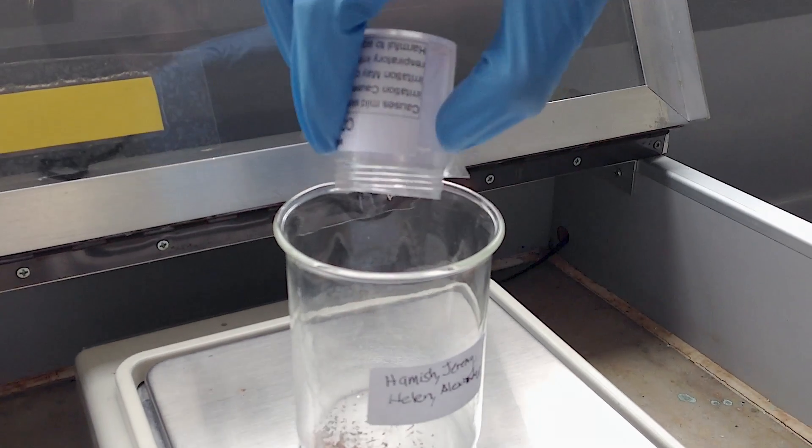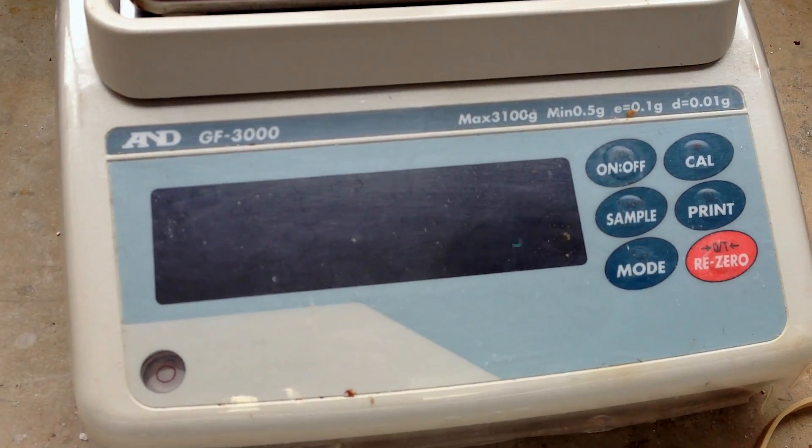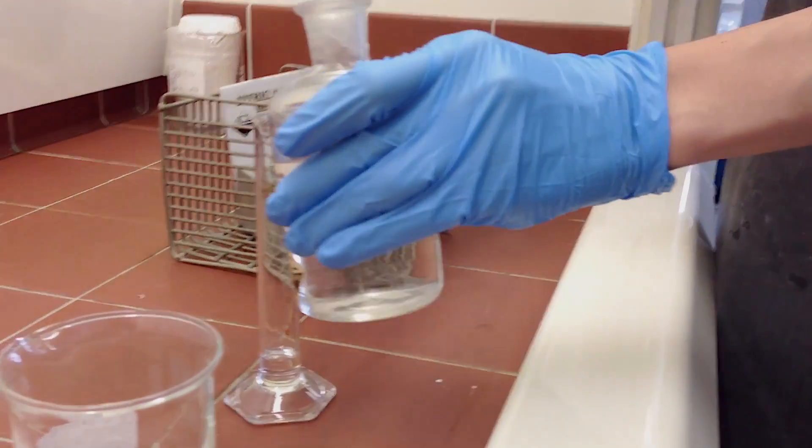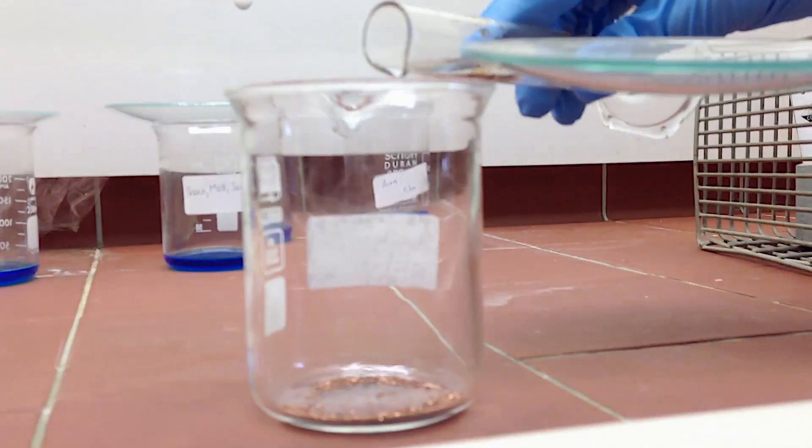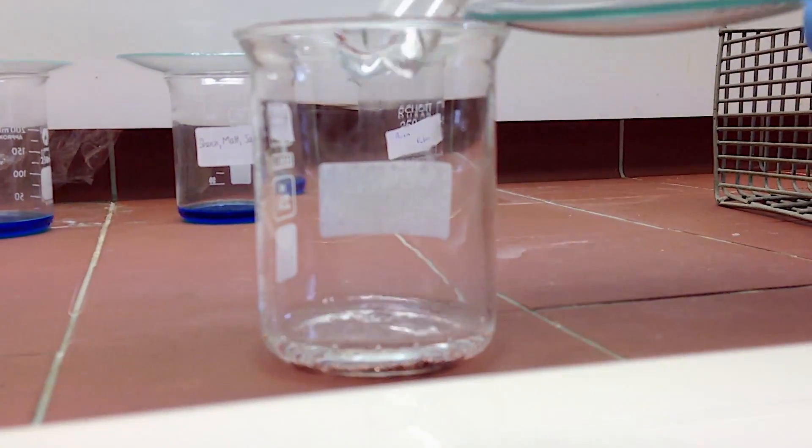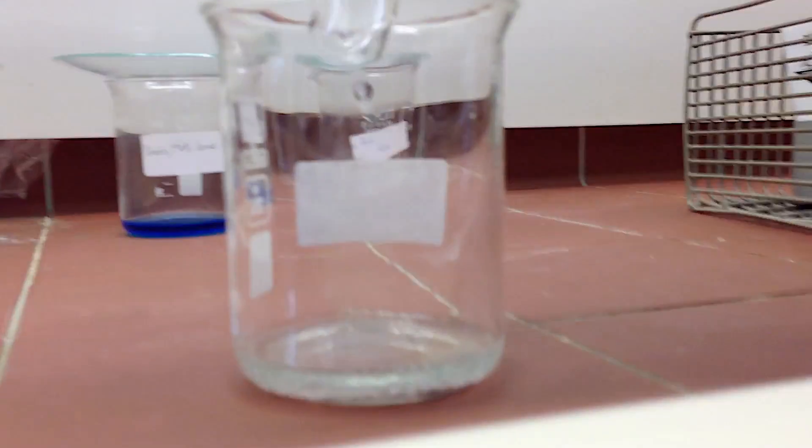We began by weighing roughly 1.5 grams of copper turnings and then added 15 mL of 8 molar nitric acid. Since this created noxious gas, we left it in the fume hood to continue reacting overnight.